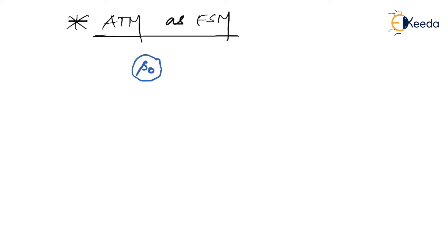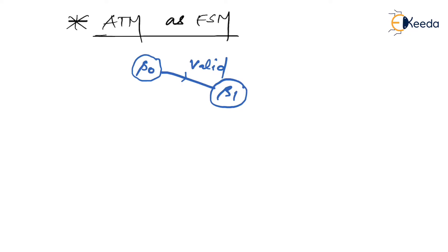If you swipe a valid card, the machine moves to another state called S1, where it asks you to enter the type of account — current or saving. If you swipe an invalid card, it does not move to S1 and remains in S0 only.